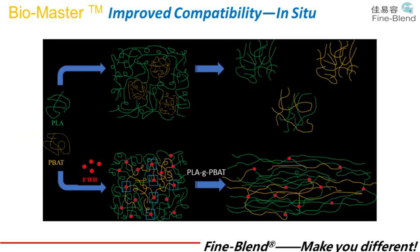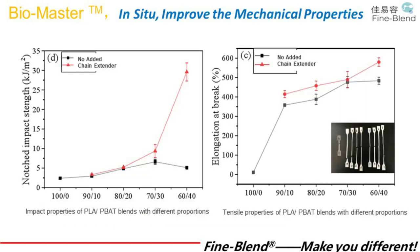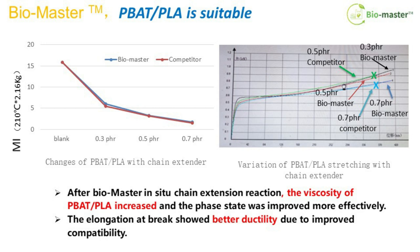PLA and PBAT were originally incompatible, but after addition of chain extender, PLA-g-PBAT was generated in situ. The following diagrams show improved compatibility through in situ compatibilization, with mechanical properties obviously improved. Adding Bio Master increased the viscosity of the PLA/PBAT blend and improved the phase morphology more effectively, with elongation at break showing better ductility due to improved compatibility.